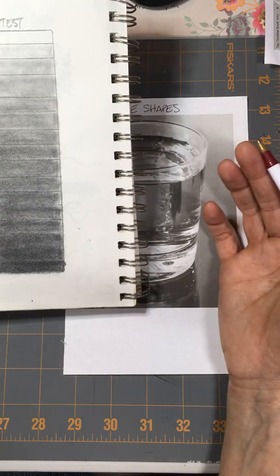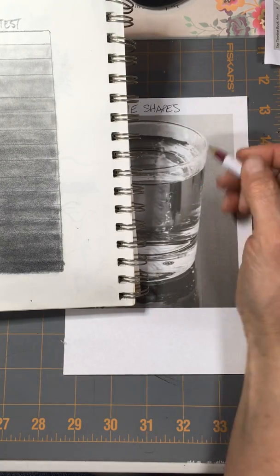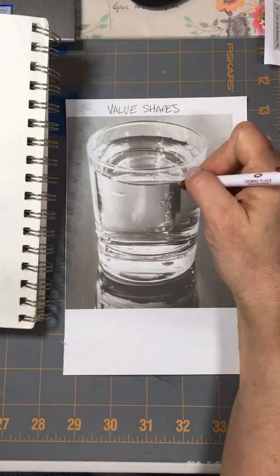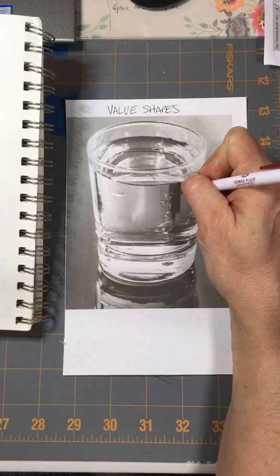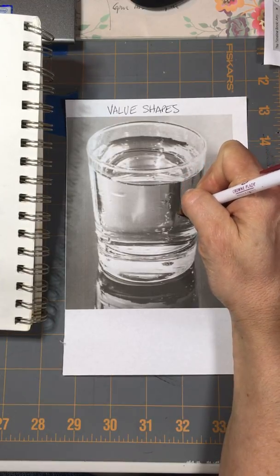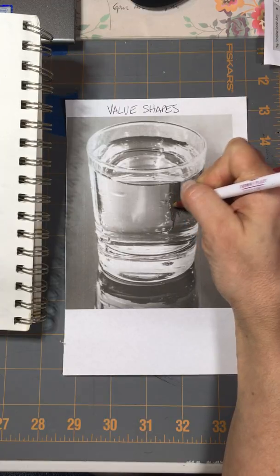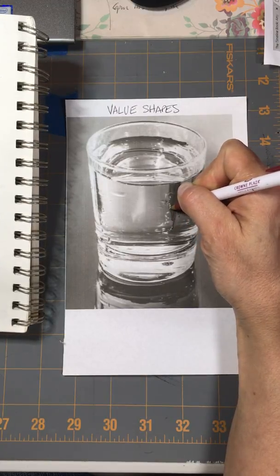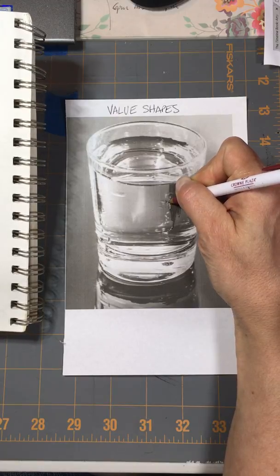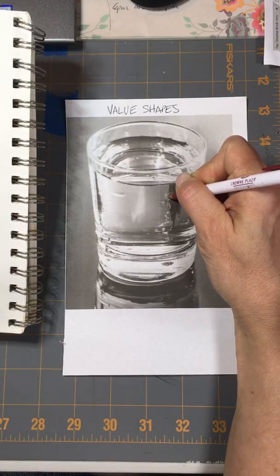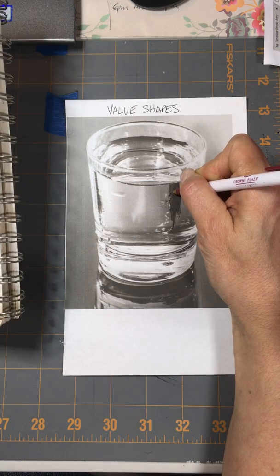Okay, so this is the darkest shape. I want you with a ballpoint pen to go in and outline that shape. Do you see I have a little, there's a little string of three white dots? I'm just going to avoid that. I'm going to go around it and I'm going to take a look at this shape in particular.